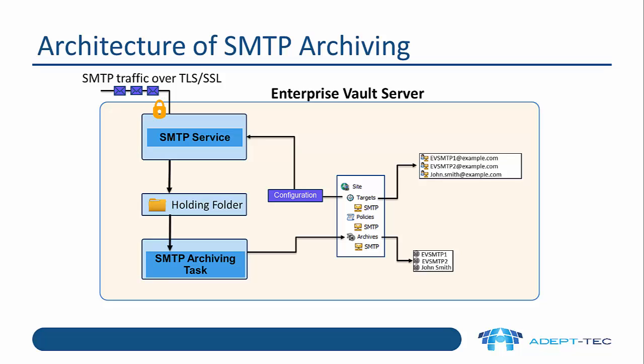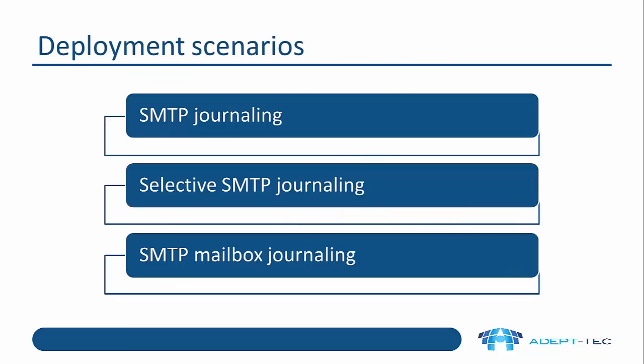One of the things about SMTP archiving is that it can actually ingest emails into any type of archive — it could be a mailbox archive, it could be a journal archive. So it's very flexible.